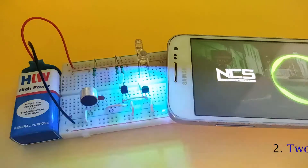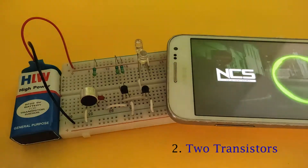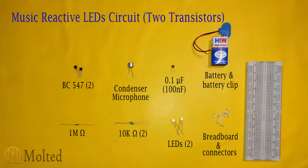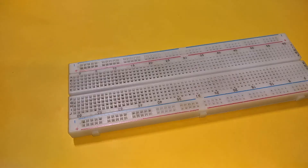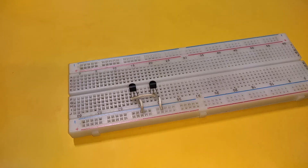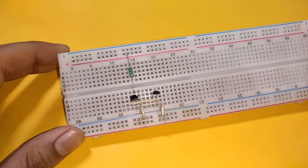The next circuit uses two transistors to make a more sensitive circuit. These are the components required and this is the circuit diagram. Place two BC547 transistors on the breadboard with their emitters connected to the negative power supply, and connect the collector of the first transistor to the base of the second transistor.